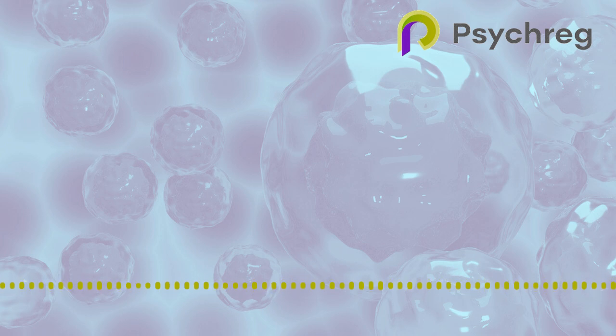Excess body fat disrupts the body's hormonal balance, leading to chronic inflammation, which is a hallmark of many cancers. Fat tissue secretes hormones such as estrogen and insulin-like growth factor 1, IGF-1, which can fuel the growth and spread of cancer cells. Obesity also disrupts the body's natural cycles of cell death, which in turn allows abnormal cells to survive.